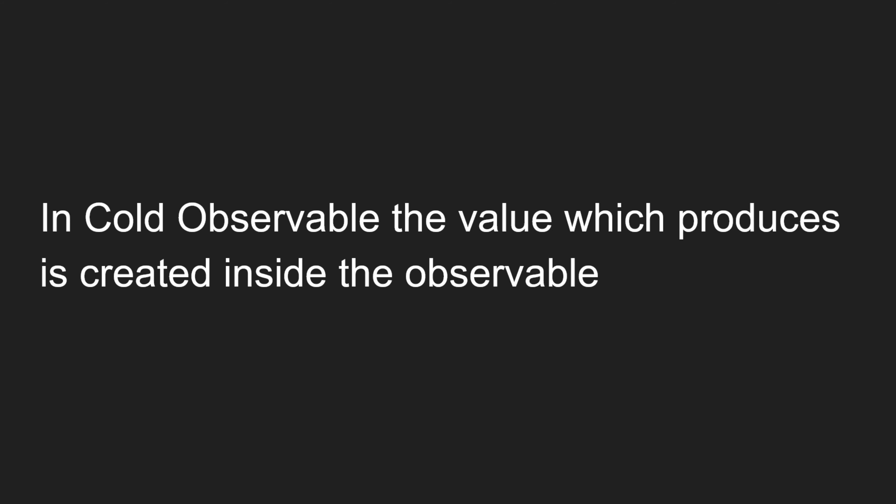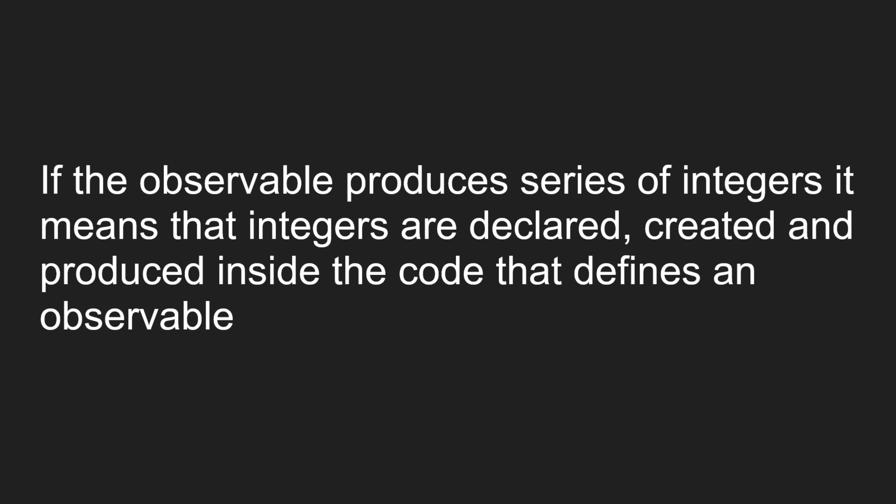In a cold observable, the value which is produced is created inside the observable. What I mean is: if you are creating a cold observable, you will be pushing a value — using observable.next or something like that — to the observer. The value is created, produced, and everything happens inside the observable, inside the callback function. That is the key thing about cold observables.